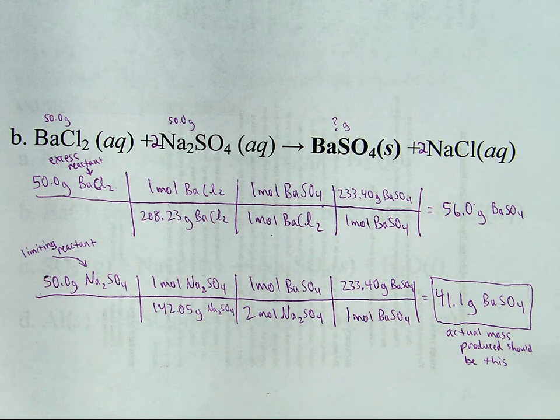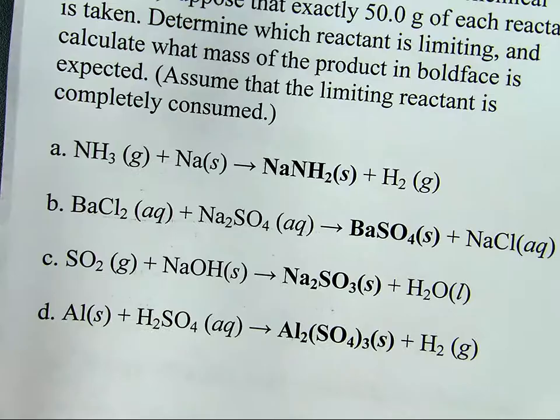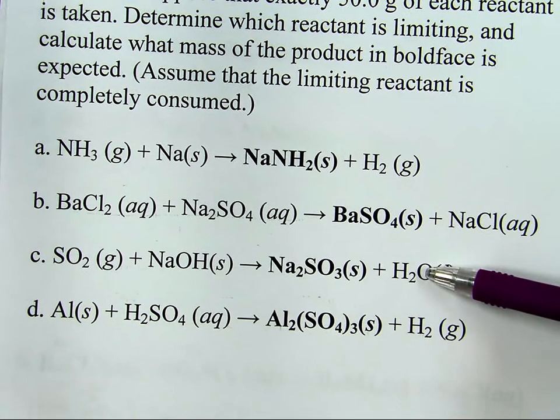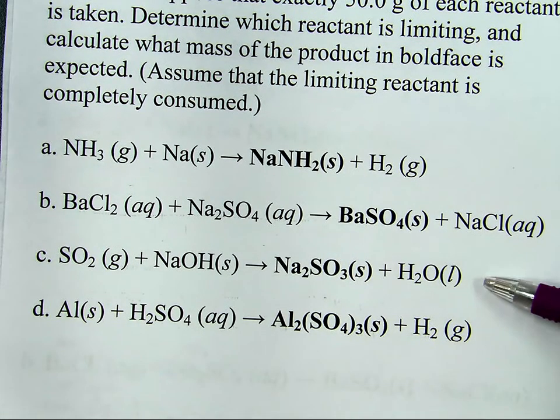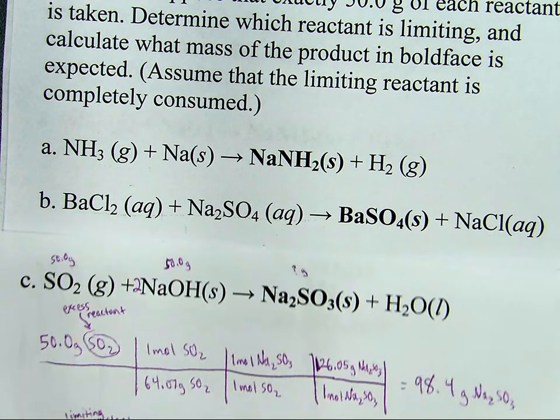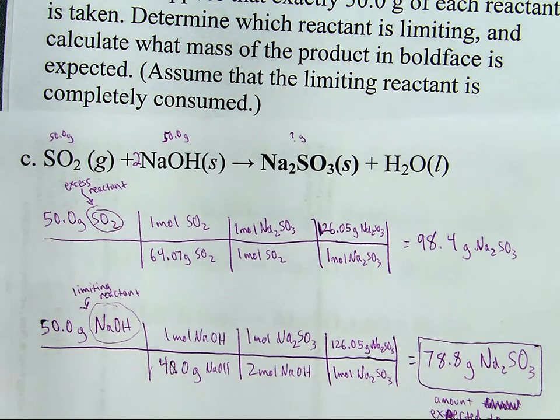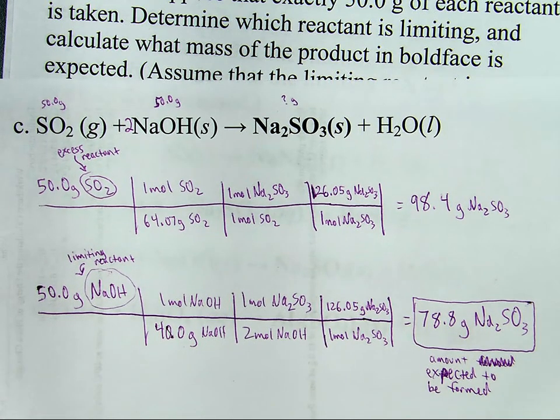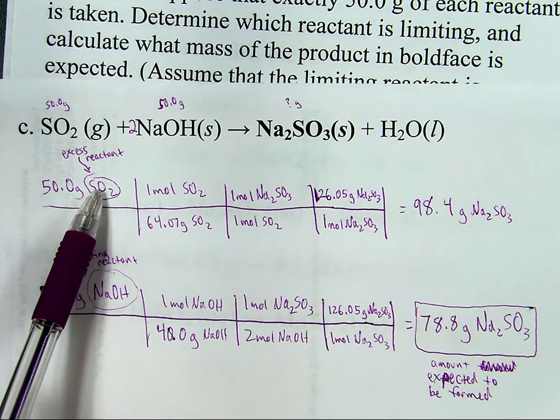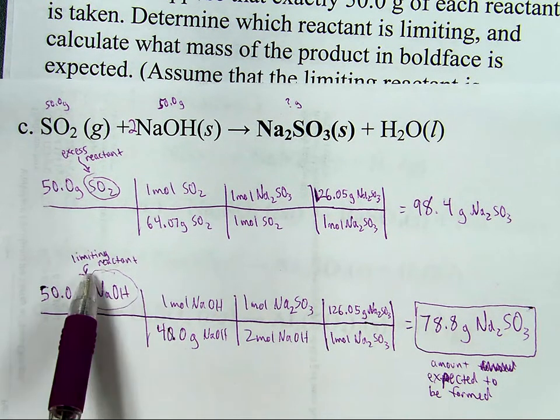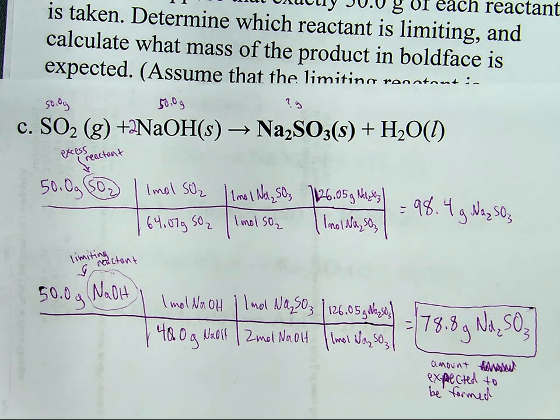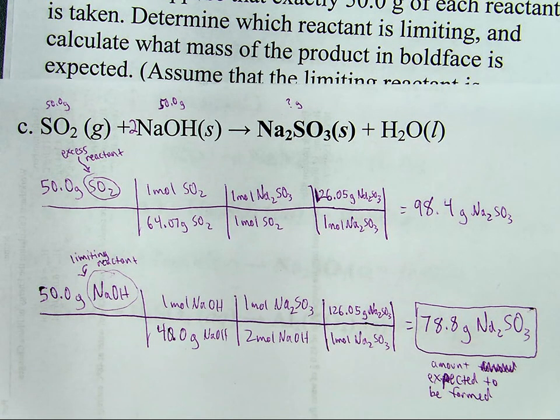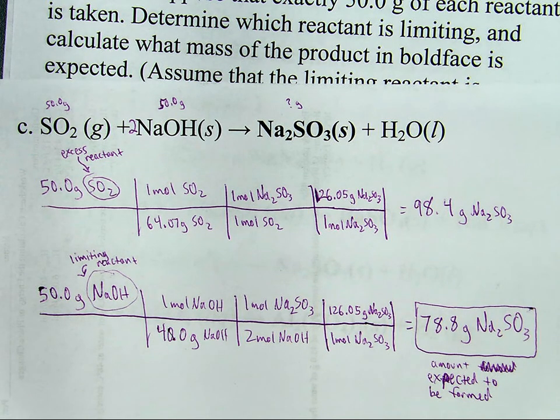Next question, question C. If you solved it correctly you've got something like this, where once again here is your excess reactant because it makes more, your limiting reactant because it makes less, and of course then the smaller amount is the amount we'd expect to be produced.